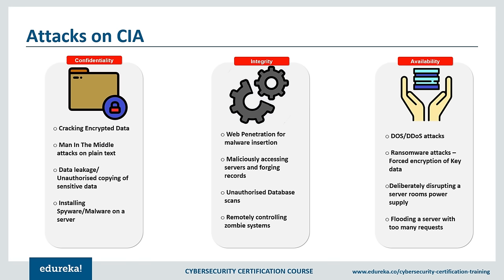Next on the list we have integrity. Integrity involves maintaining the consistency, accuracy, and trustworthiness of data over its entire lifecycle. Data must not be changed in transit, and steps must be taken to ensure data cannot be altered by unauthorized people. Measures include file permissions and user access controls. Version control may be used to prevent erroneous changes or accidental deletion by authorized users. Some data might include checksums — even cryptographic checksums — for verification of integrity. Backups or redundancies must be available to restore affected data to its correct state.